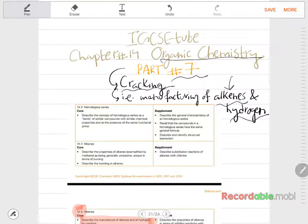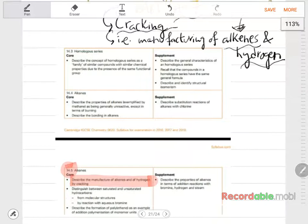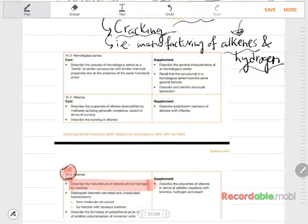If you haven't watched part number 6, it is the part where I introduce alkenes, so go and watch it if you haven't. This is a screenshot from the syllabus from section 14.5. It describes the manufacture of alkenes and of hydrogen by cracking, so that's the part of the syllabus we will be covering in this video.